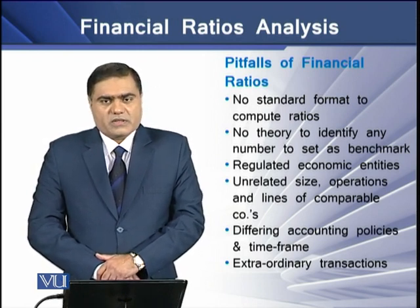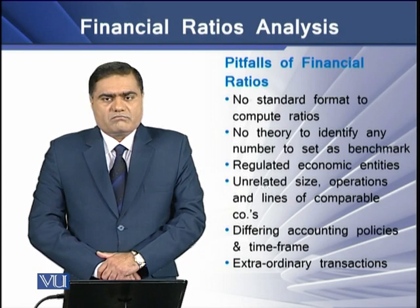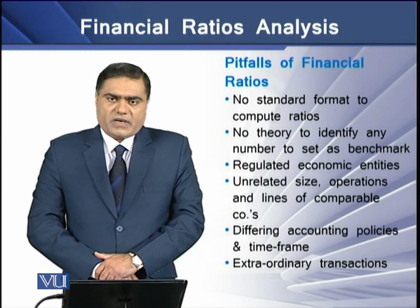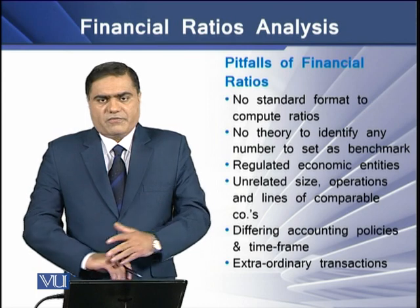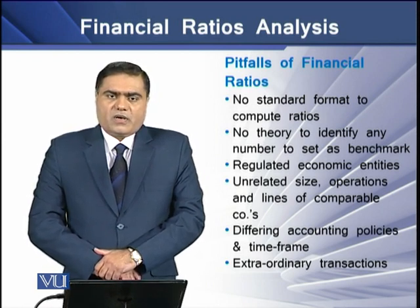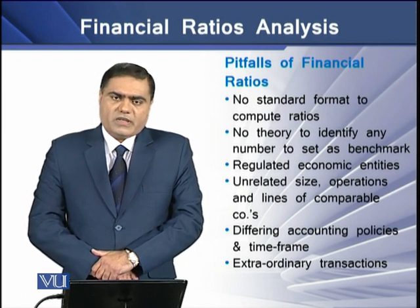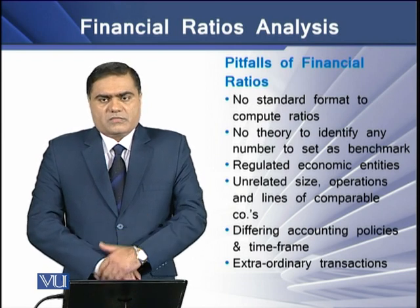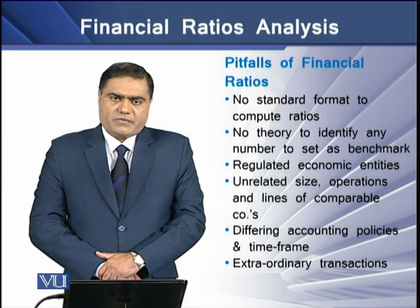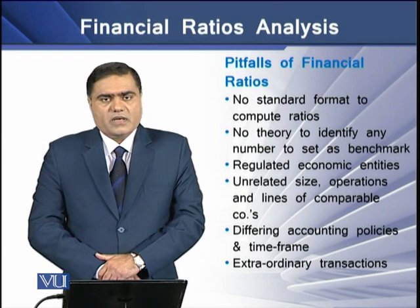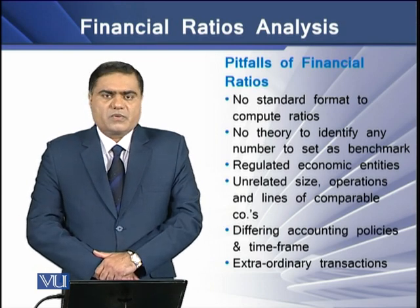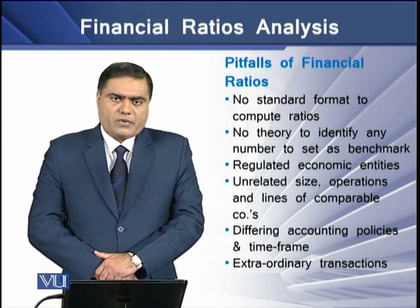There is also a problem with accounting policies. For example, one company uses the reducing down value method for depreciating its long-term assets, while another company in a similar line of business uses the straight-line depreciation method. Additionally, there is a difference in timing — one company ends its financial year on 31st December, while another in a similar line of business closes its accounts on 30th June every year. Furthermore, certain extraordinary transactions can hinder fruitful ratio analysis, creating problems for users of accounting ratios.